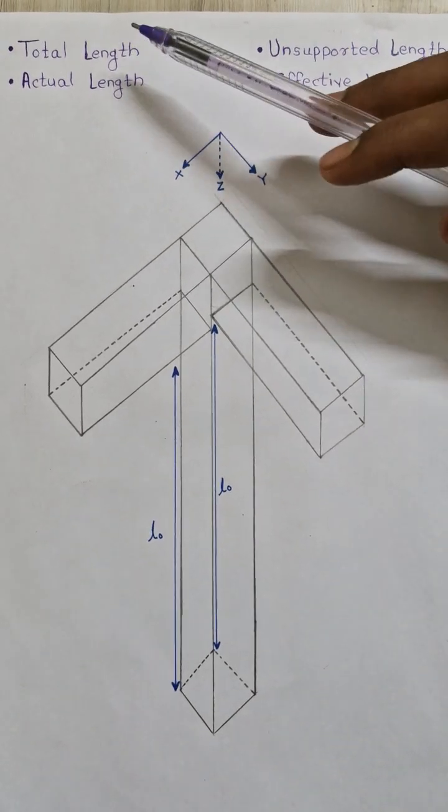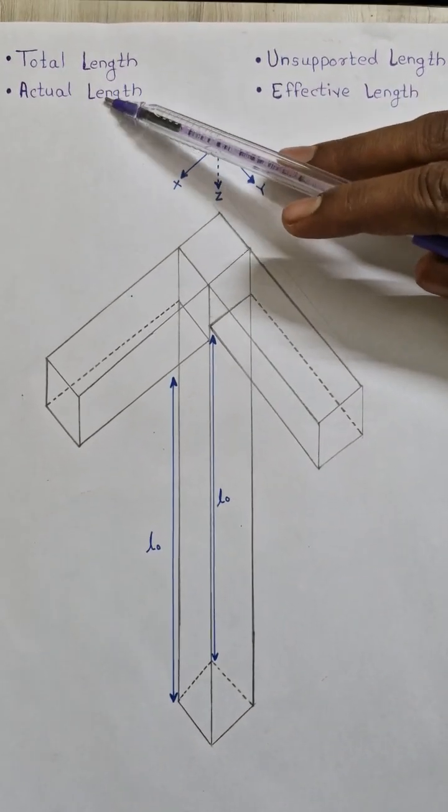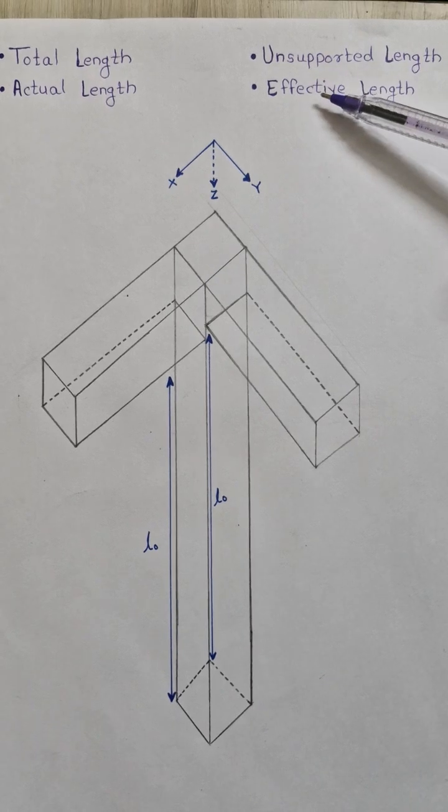In column, we study four different types of lengths: total length, actual length, unsupported length, and effective length.